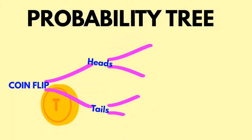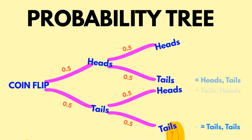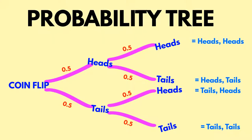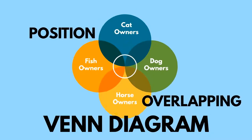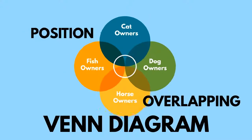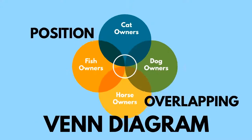We can also use a probability tree to represent our data and see all possible outcomes of an event or sequence of events. Each branch in a tree diagram represents a possible outcome. Similarly, a Venn diagram is another useful way to represent mathematical or logical sets of information. In a Venn diagram, the position and overlapping of circles are used to indicate the relationships between different sets of information.